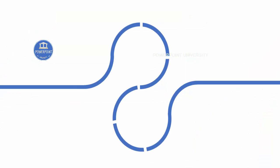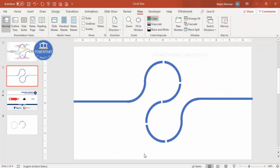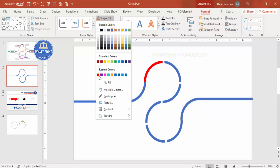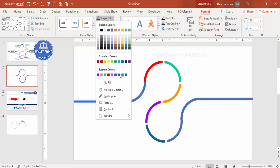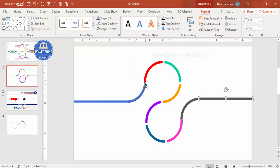Run a slide show to confirm everything looks correct. Now apply different colors: select each section one by one, go to Format Shape Fill, and assign colors — for example, red for the first section, green, then other colors of your choice. Continue selecting each arc segment and applying the appropriate color.